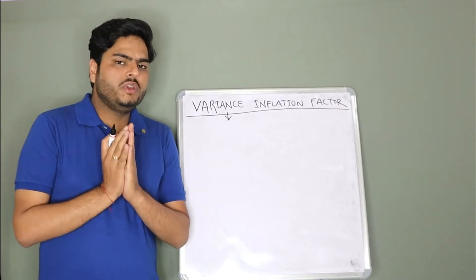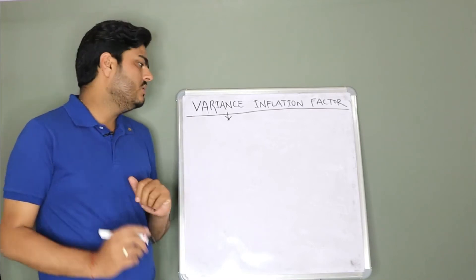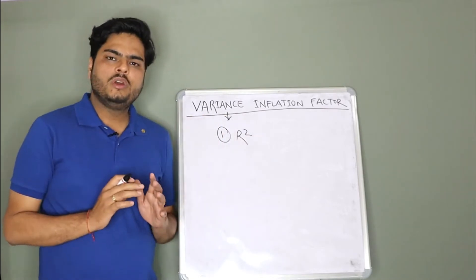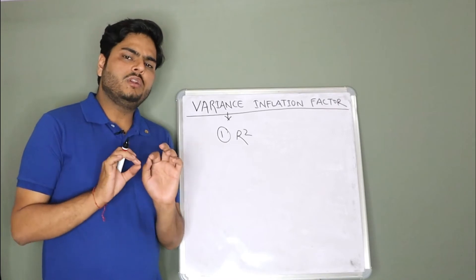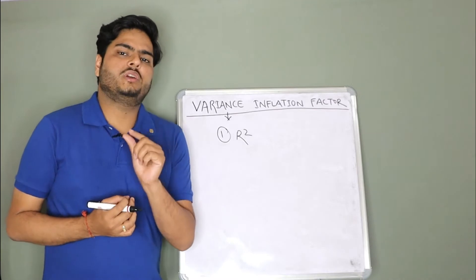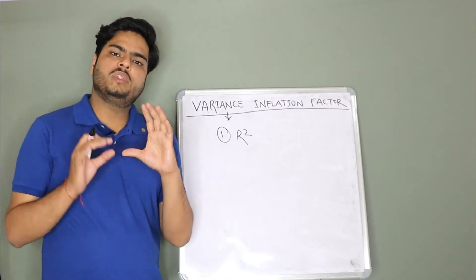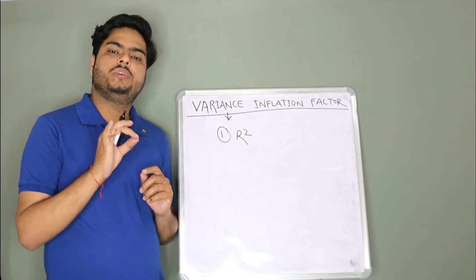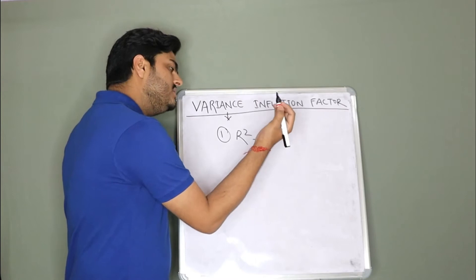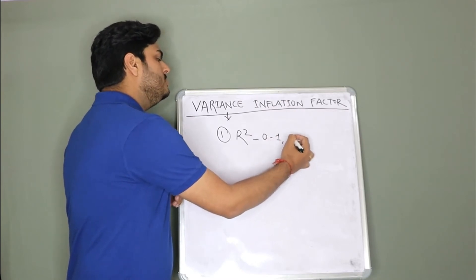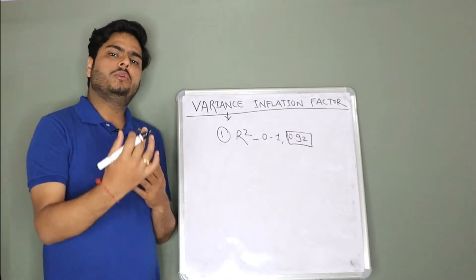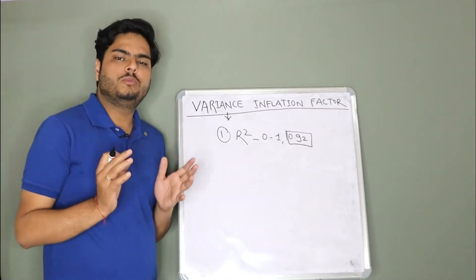Now for understanding VIF you need to understand two things. One is what is R squared. For this topic I will just give you a high level knowledge of what is R square. This is nothing but a measurement metric or a number that tells you how good your model is fitting. R squared is typically in the range of 0 to 1. If it is closer to 1, let's say 0.92, your model is said to be a good model. If it is far from 1, your model is said to be not a good model.